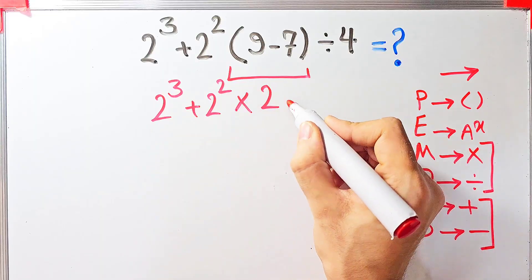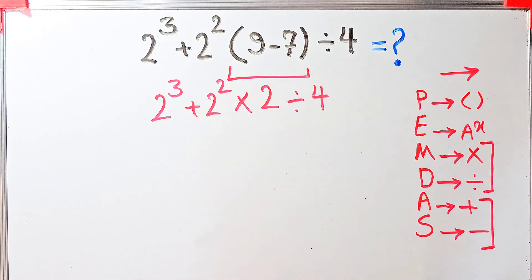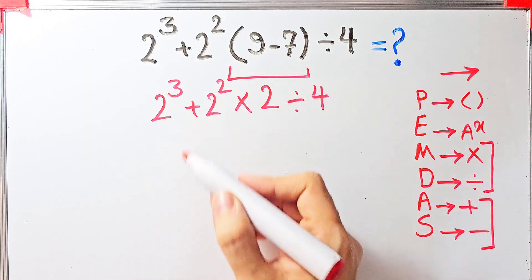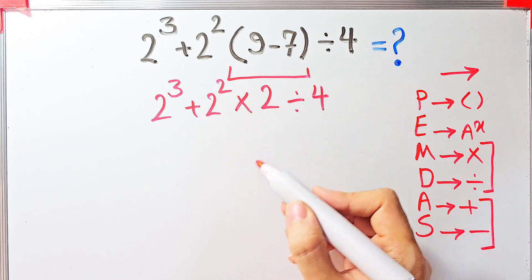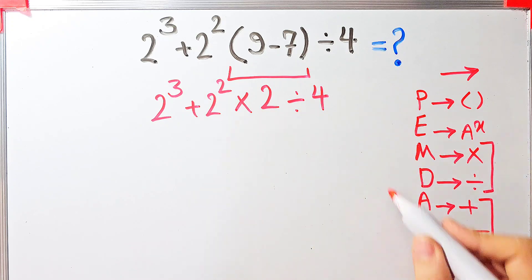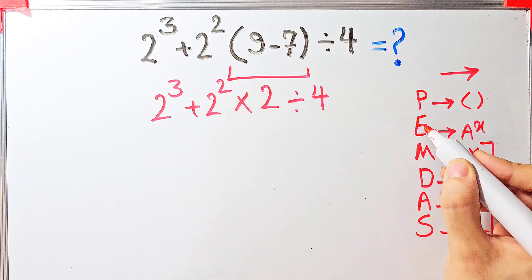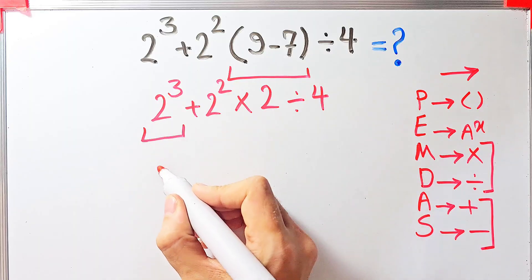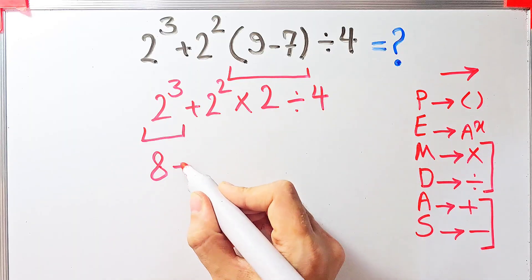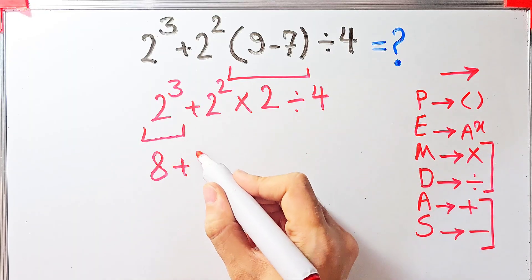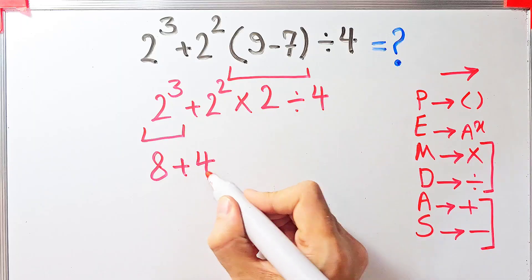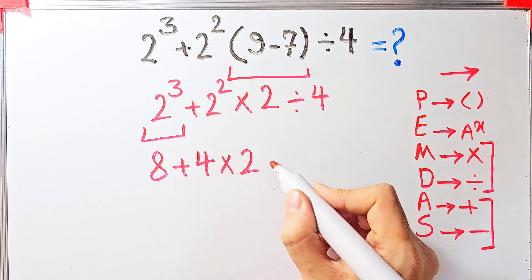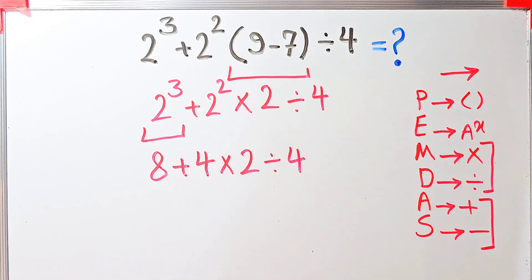In this step we have exponents, addition, multiplication, and division. First we simplify the exponents. 2 to the power of 3 equals 8, and 2 to the power of 2 equals 4. Now we have: 8 plus 4, times 2, divided by 4. We still have addition, multiplication, and division to handle.